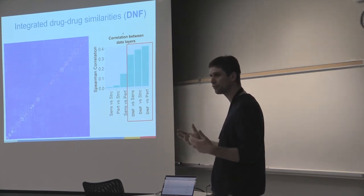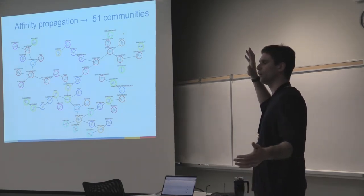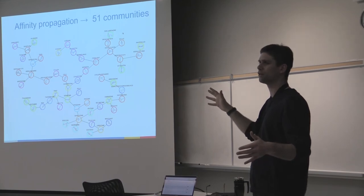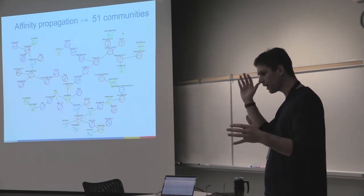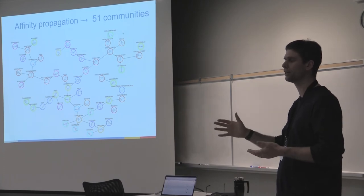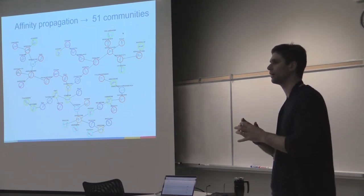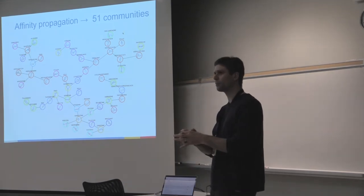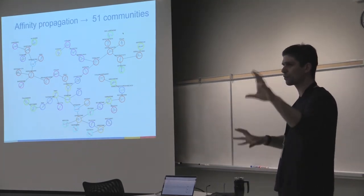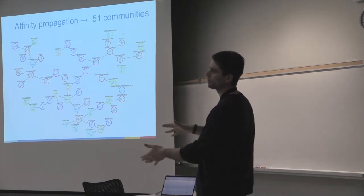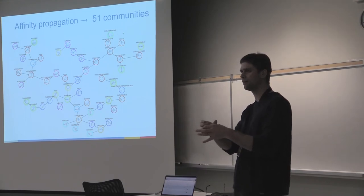Now we need to see whether this new classification is better than any single layer classification. We have around 280 drugs in the drug similarity matrix. We truncated similarities that were too weak and ran a community detection algorithm — specifically affinity propagation — which tries to find sub-networks that are extremely tightly connected. Each cluster is represented by one exemplar drug. We use Cytoscape to display the network of representative drugs, so instead of 280, you see only 51 communities.